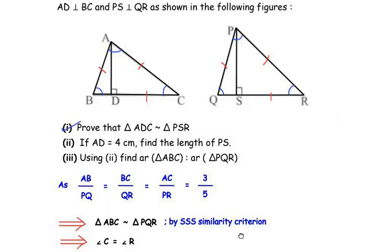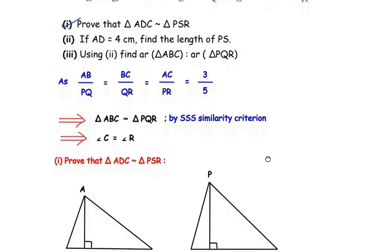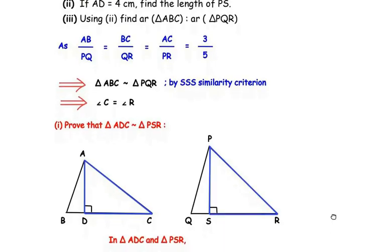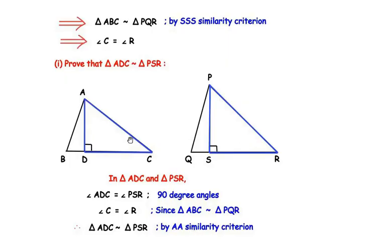Now let us focus on the first question — prove that triangle ADC is similar to triangle PSR. We have redrawn the two triangles for easy reference and highlighted triangles ADC and PSR. In these two triangles, angle ADC equals angle PSR because both are 90-degree angles, since AD is perpendicular to BC and PS is perpendicular to QR. We also have angle C equals angle R from the similarity of triangles ABC and PQR. With two angles equal, triangle ADC is similar to triangle PSR by the AA similarity criterion. So we have proved that these two triangles are similar.